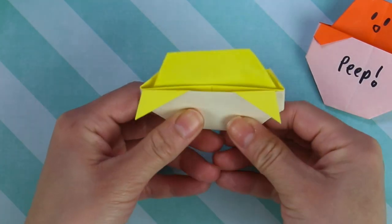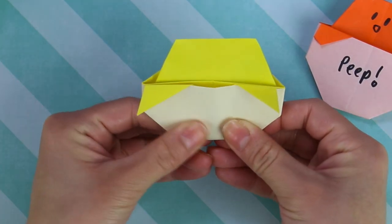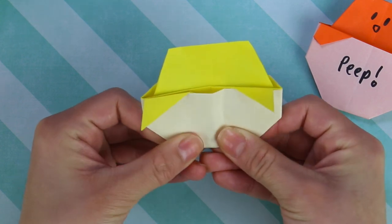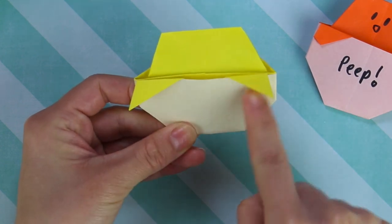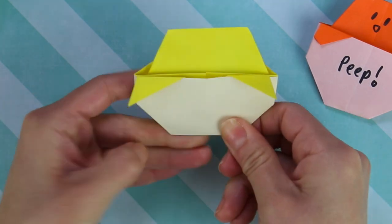And then you're going to round this corner here. So let's just fold it up. Again, as much or as little as you want. I like the egg to be, you know, not too skinny. So like that. Crease that in.